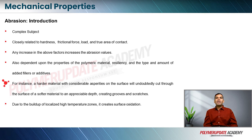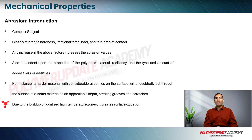For instance, a harder material with considerable surface asperities will cut through the surface of a softer material to an appreciable depth, creating grooves and scratches. Due to the buildup of localized high-temperature zones caused by friction, there will also be oxidation at the surface. This oxidation results in weathering, making it one form of surface weathering as well.